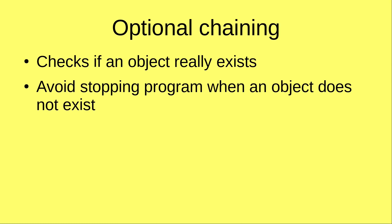Optional chaining helps us to see whether an object really exists. It can also avoid the program stopping when an object does not exist. If the object doesn't really exist, the program can just execute as usual.